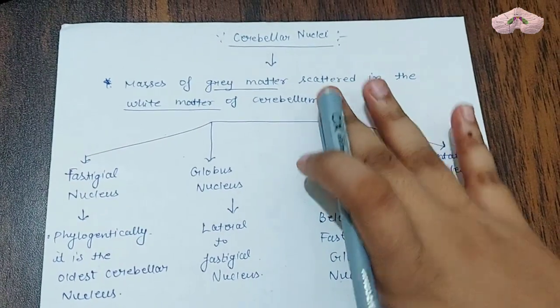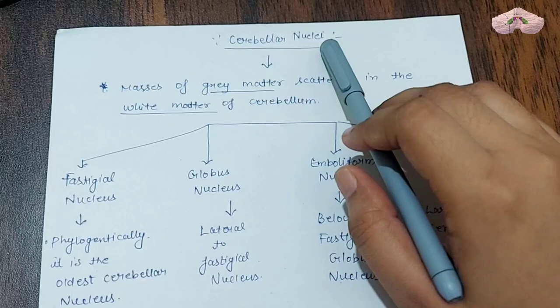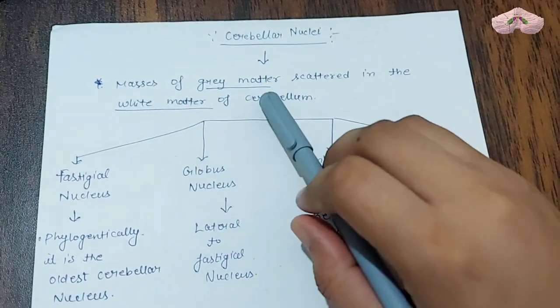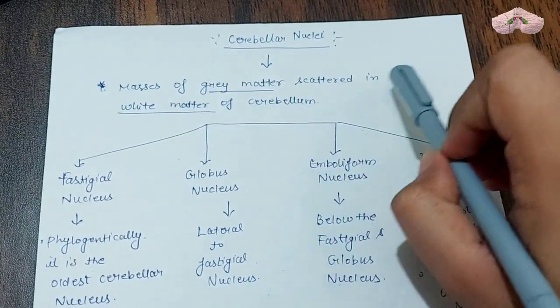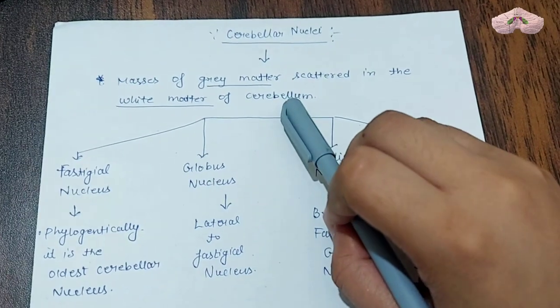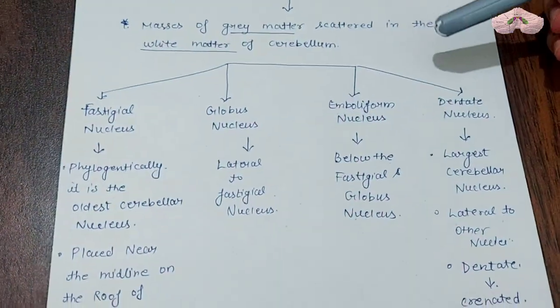Now let's understand it in detail. The proper notes on this topic: cerebellar nuclei are masses of gray matter scattered in the white matter of the cerebellum. We have four types of nuclei.